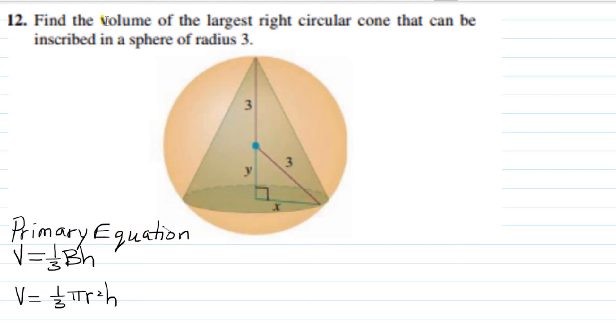In the case of a cone, the base is a circle. So instead of capital B for area of the base, I'm going to write πr², which is the area of that circle.